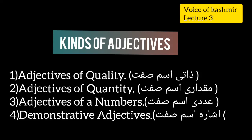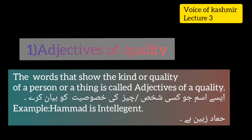Today our lecture is about kinds of adjectives. There are four kinds of adjectives that we will discuss here: adjectives of quality, adjectives of quantity, adjectives of number, and demonstrative adjectives.